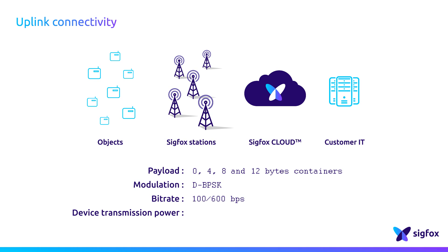The bitrate depends on the operation region, and the transmission power can go up to 22 dBm ERP in radio configuration number 2.